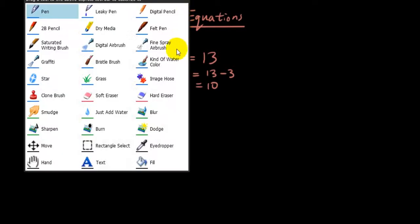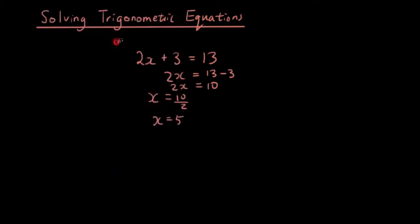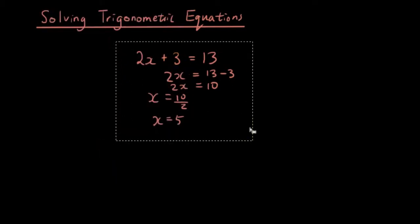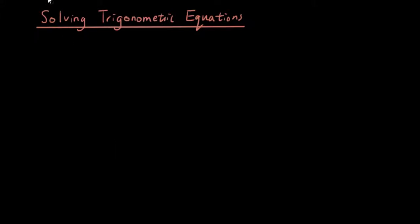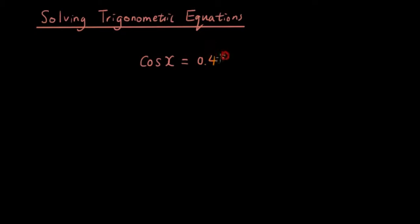Now let's talk about how to solve a trigonometric equation. A trigonometric equation is similar to an equation but we have a trigonometric function in there somewhere. So let's try to solve this: cos x equals 0.48.